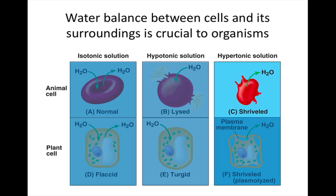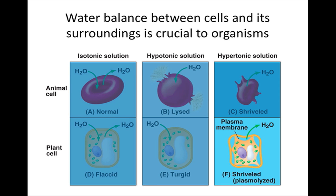In a hypertonic solution, the solution has a higher solute concentration. The animal cell shrivels and can die from water loss. Both animal and plant cells experience plasmolysis, which is the shriveling effect, from this type of solution.